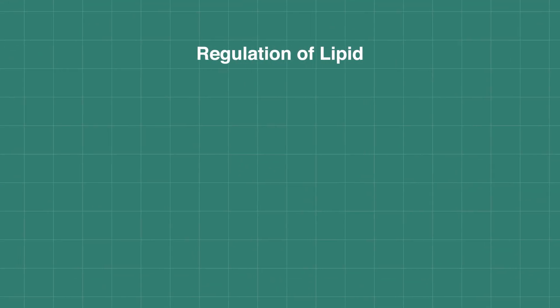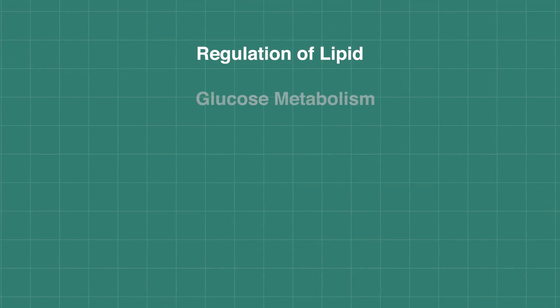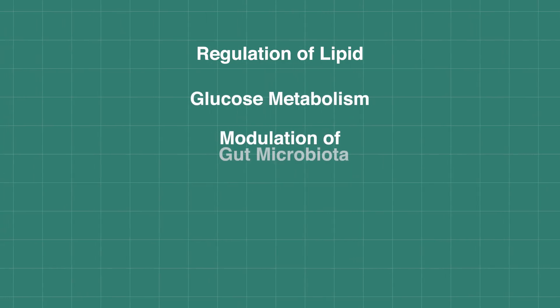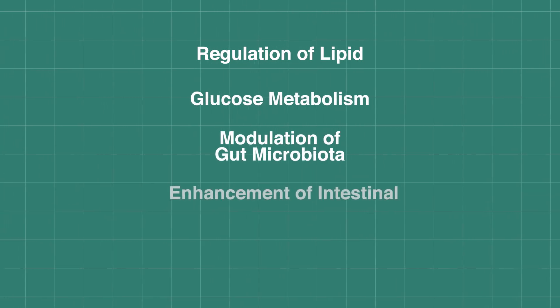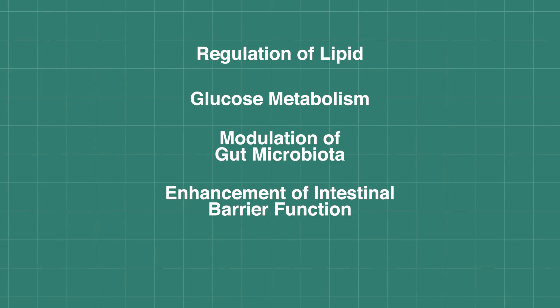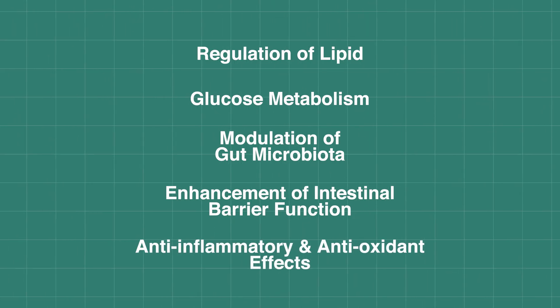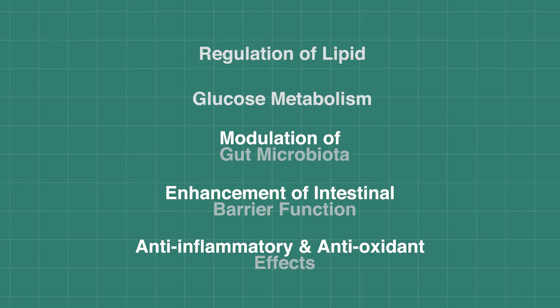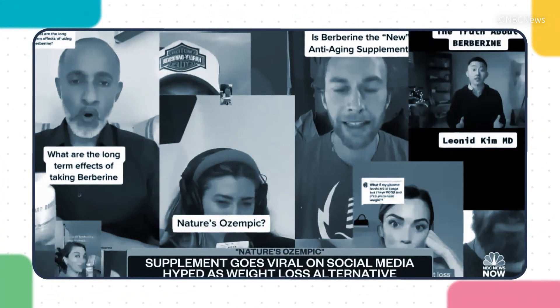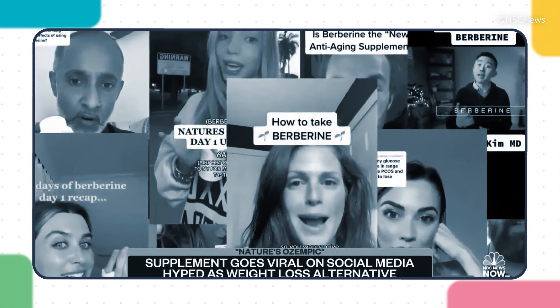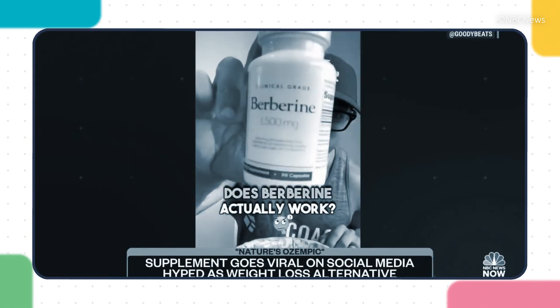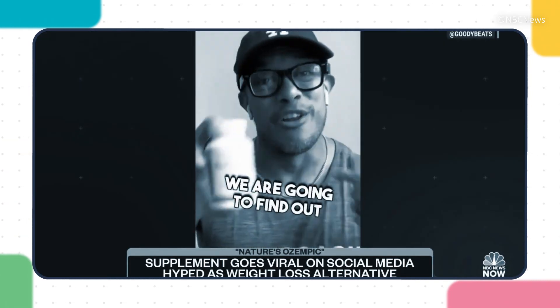In summary, berberine influences liver and gastrointestinal metabolism through multiple mechanisms of action, including regulation of lipid and glucose metabolism, modulation of gut microbiota, enhancement of intestinal barrier function, and anti-inflammatory and antioxidant effects. These physiological and biochemical effects contribute to the diverse health benefits of berberine in promoting liver and gastrointestinal health. Thank you for watching — happy health!